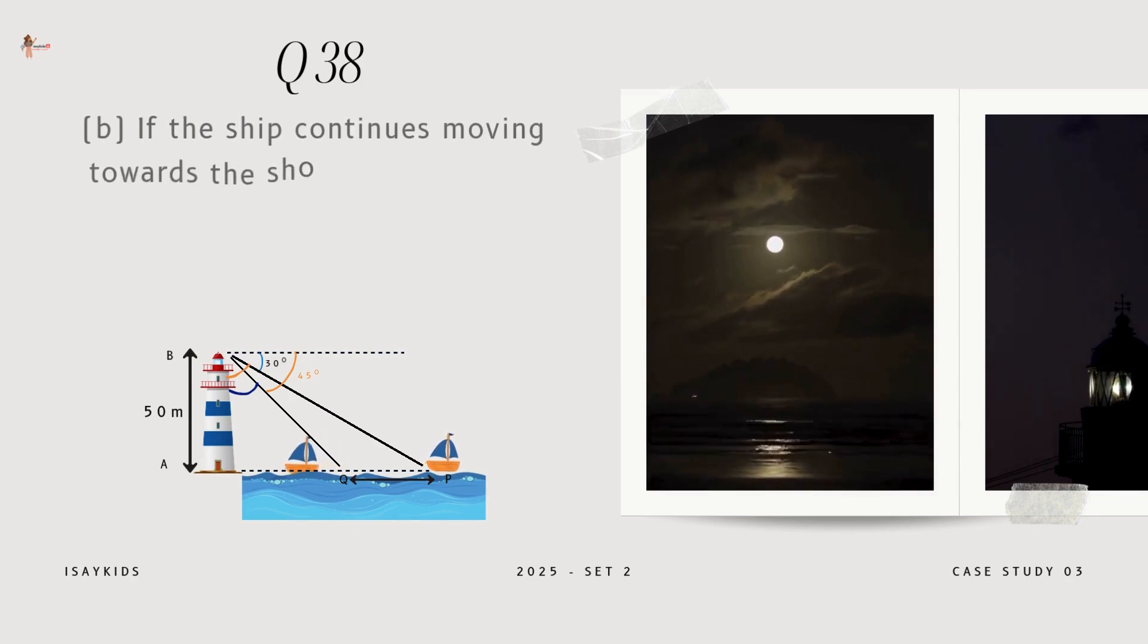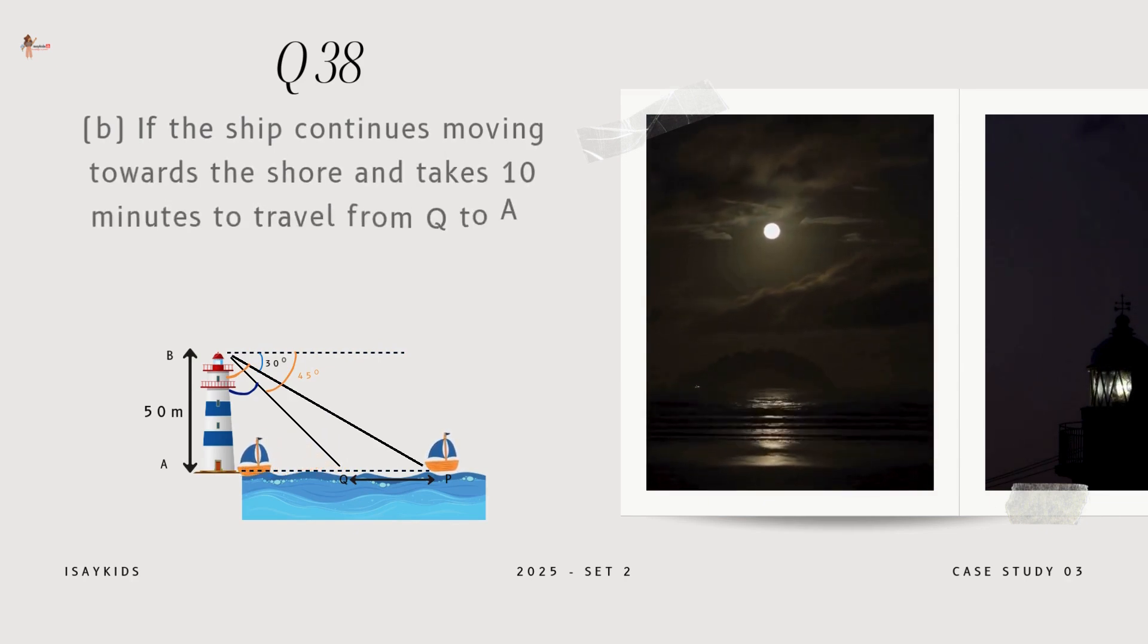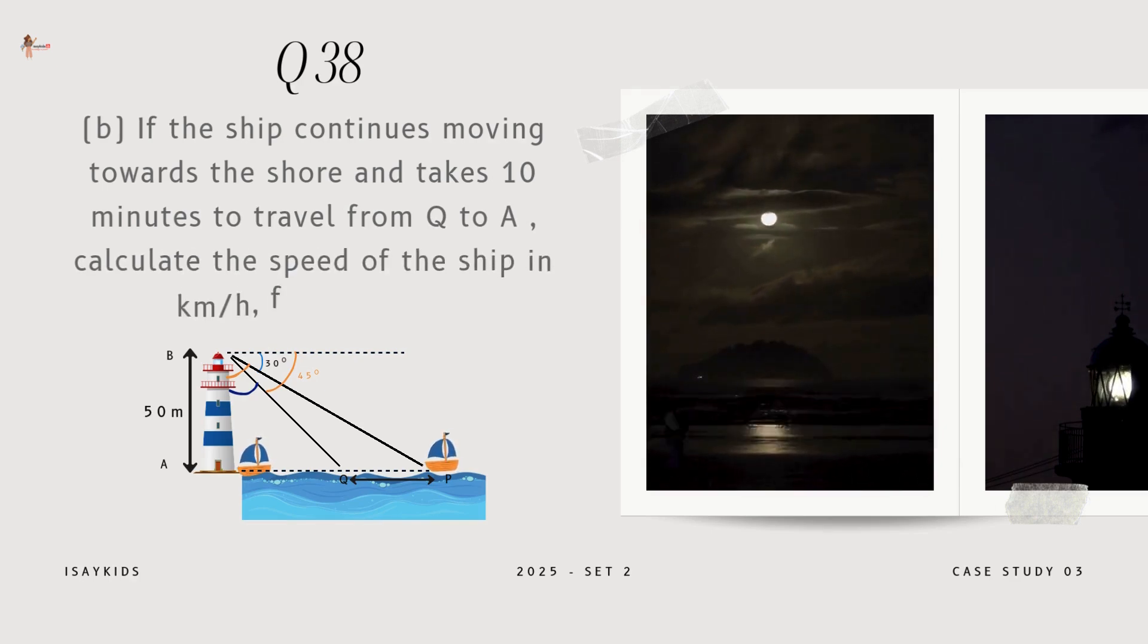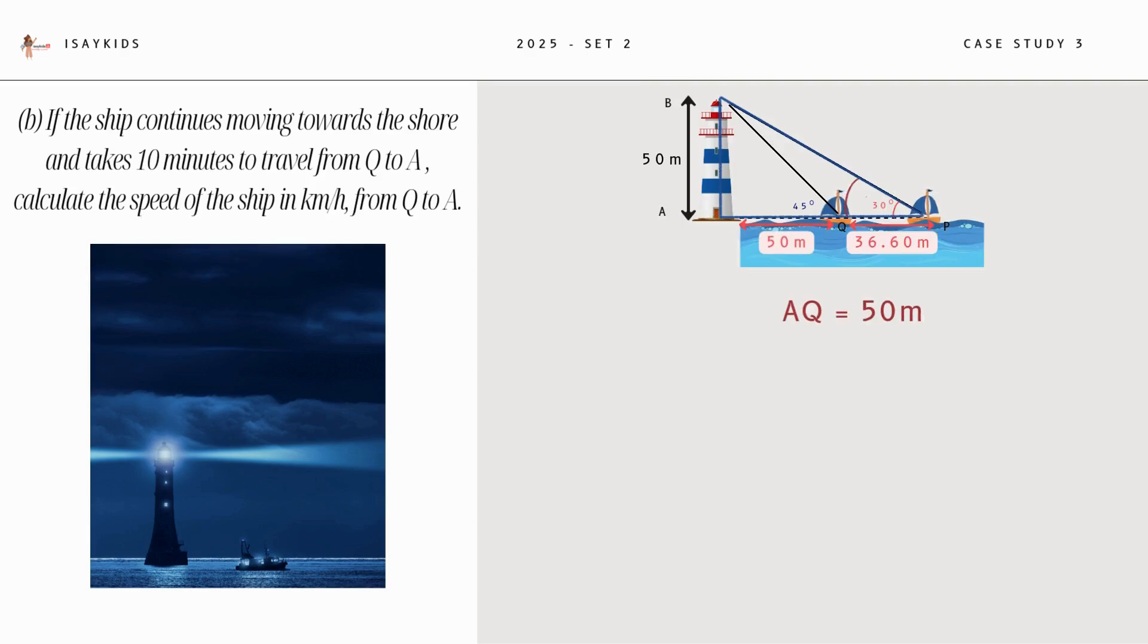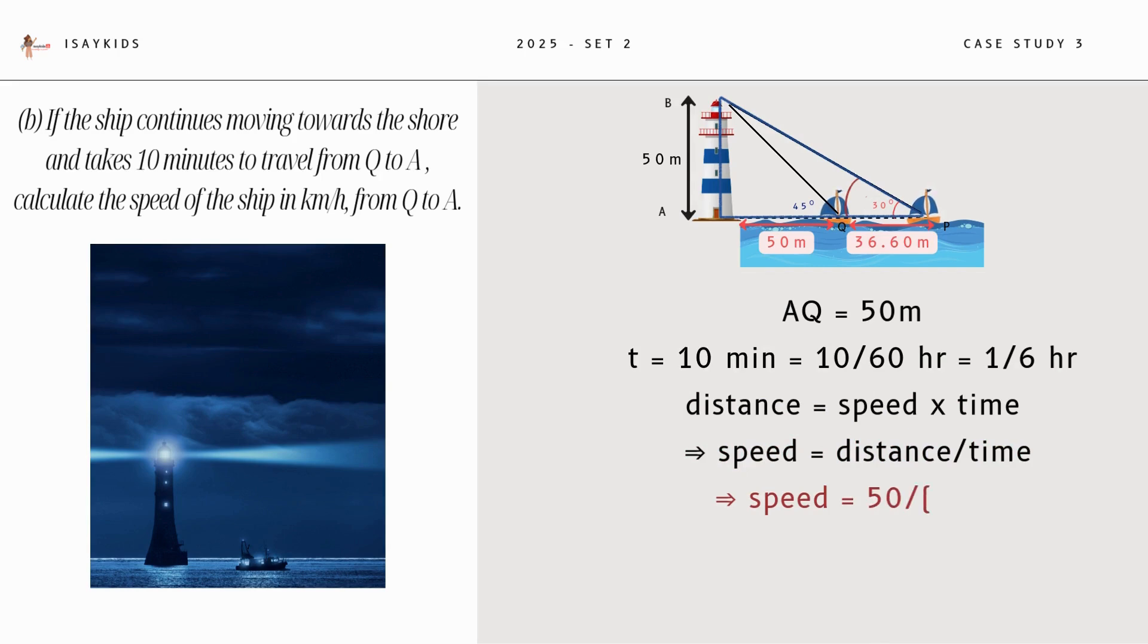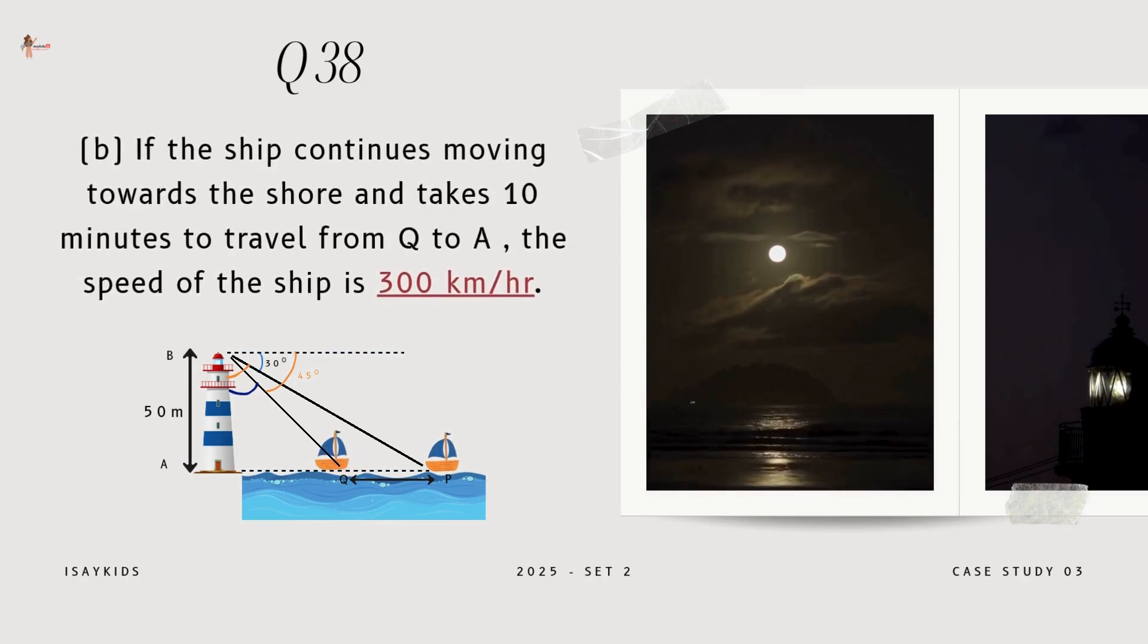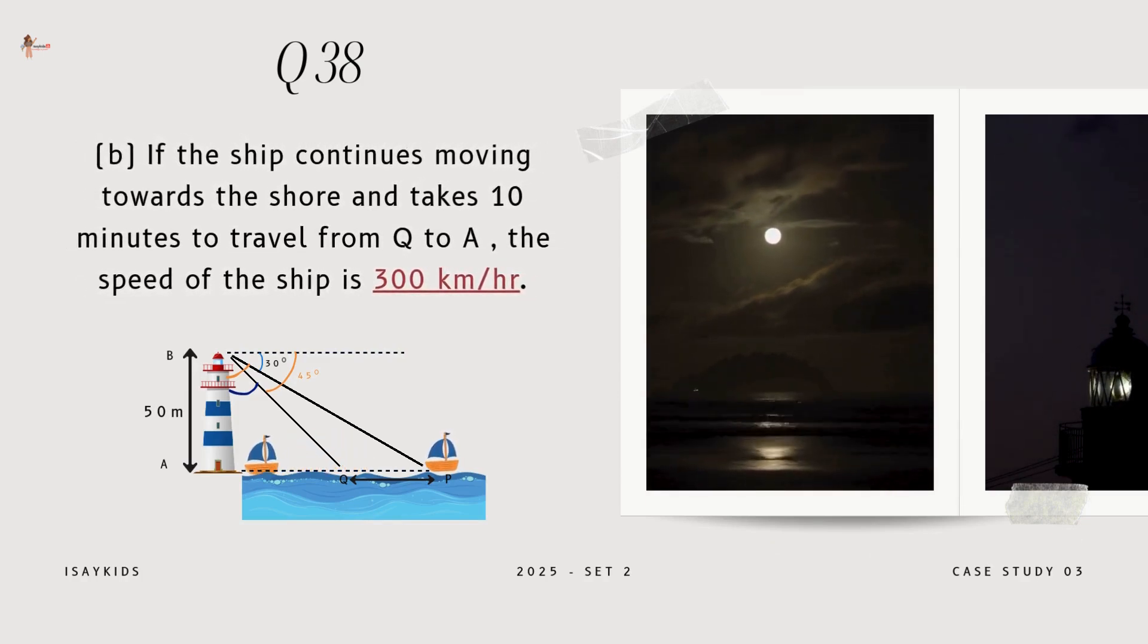If the ship continues moving towards the shore and takes 10 minutes to travel from Q to A, calculate the speed of the ship in kilometers per hour from Q to A. Now AQ is 50 meters. Time is 10 minutes, which is 1 by 6 hours. Now distance is speed into time, which means speed is distance upon time. Substituting the values, we get speed as 50 times 6, that is 300 meters per hour. Thus, the speed of the ship is 300 meters per hour.